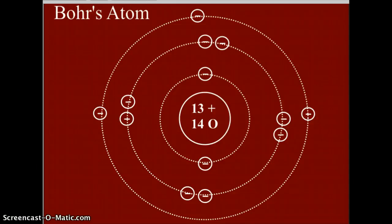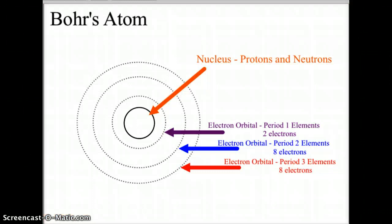Let's look at Bohr's atom and Bohr's model of the atom. This is a symbolic atom using the nucleus as the center and having the electrons arranged in orbitals around that center nucleus. The basic premise for Bohr's model is that in the nucleus you will house the protons and neutrons, which make up the bulk of the mass of the atom. The electron orbitals, of which we will show three levels here, basically mirror the periodic table.